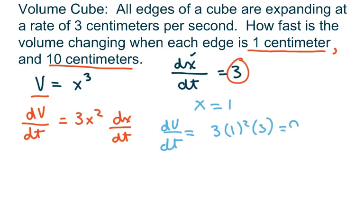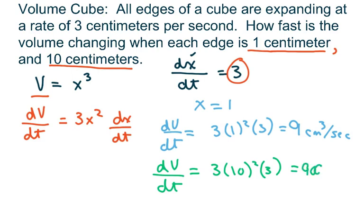And then for the 10 centimeters, the derivative of the volume with respect to t is going to be 3 times 10 squared times 3, and that's going to equal 900 centimeters cubed per second.